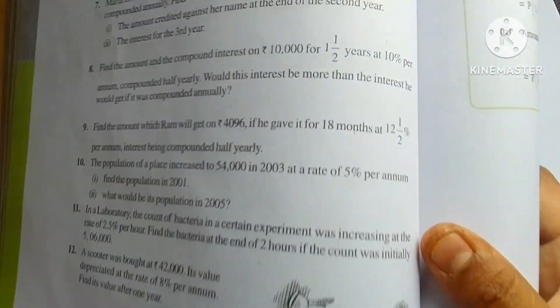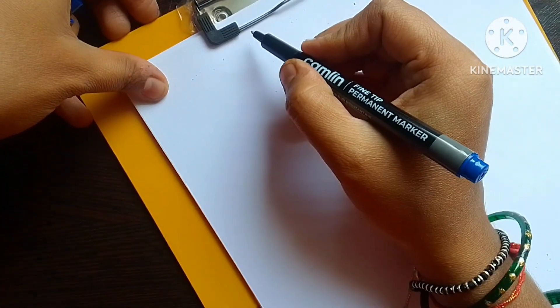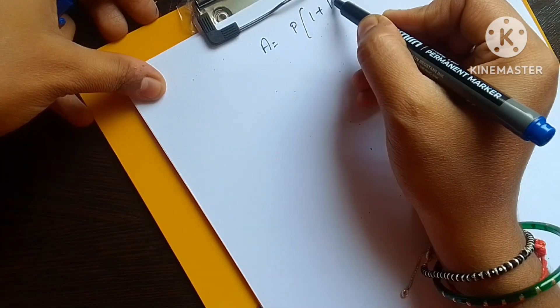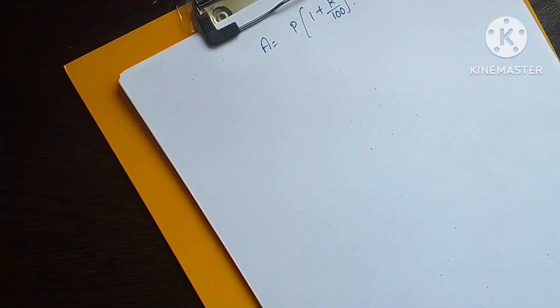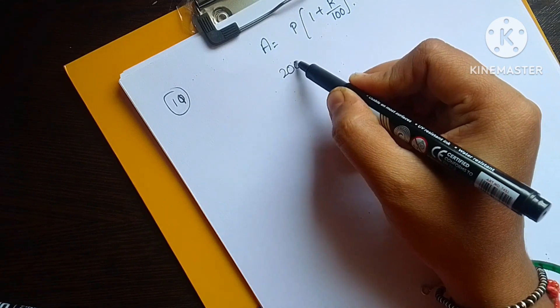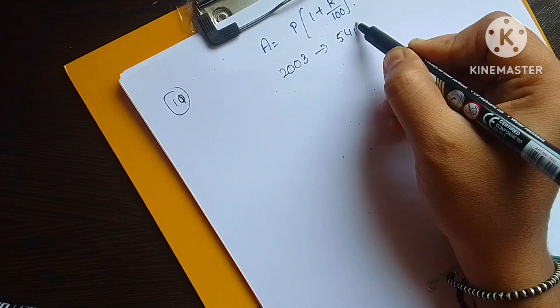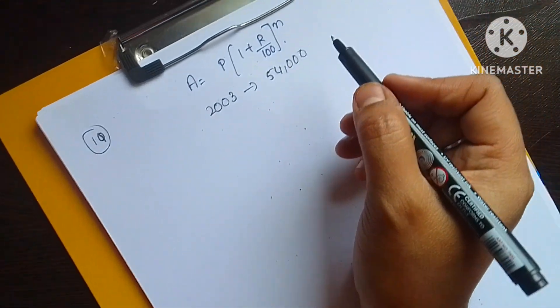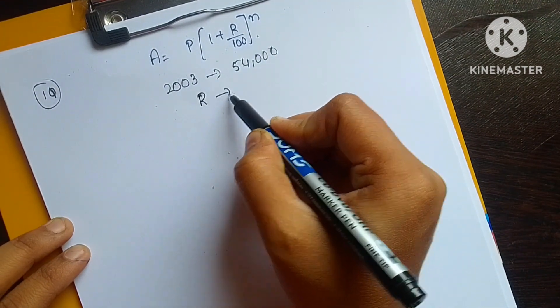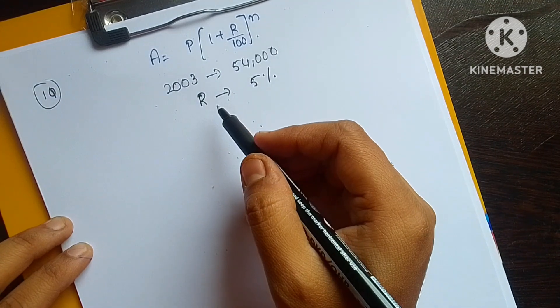How can we calculate? By using the compound interest formula: Amount equals P into (1 + R/100) to the power N. The present population in 2003 is 54,000 and the rate of interest is 5%.